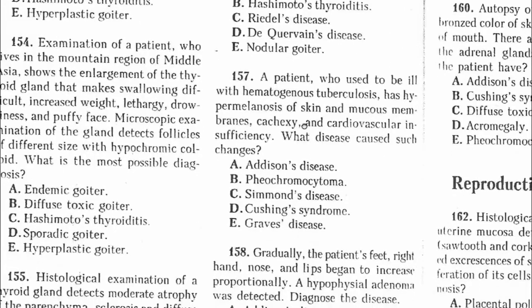Question 157: A patient who used to be ill with hematogenous tuberculosis has hypermelanosis of the skin. Hypermelanosis occurs when there is deficiency of adrenal hormone production. This is called Addison's disease. The answer is Addison's disease.